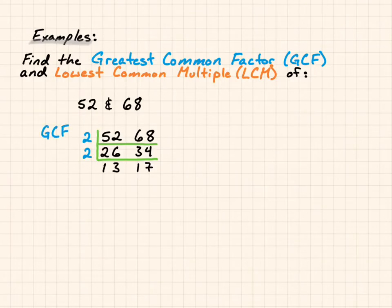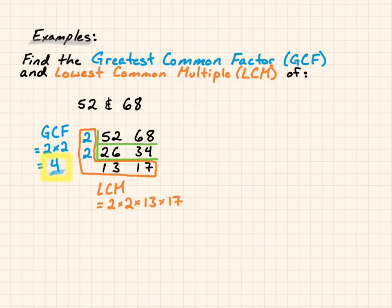So my greatest common factor is multiplying the left-hand side, 2 and 2. That would be 4. And my lowest common multiple is multiplying all these numbers together. This is a more difficult one for this example because it's 2 times 2 times 13 times 17, and that gives you 884. It would actually take you a little bit longer to do this. I just did it off to the side before we did this.